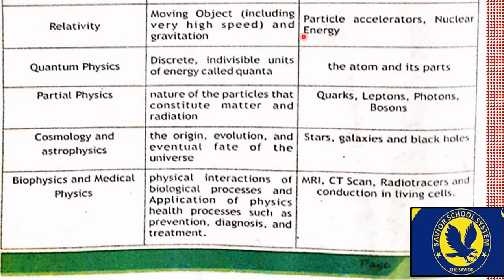اگلی branch ہے quantum physics — related to indivisible, discrete units جنہیں quanta کہتے ہیں — the atom and its parts۔ Quantum physics tries to understand whatever is happening in the universe at the smallest level۔ یعنی quantum physics اس بات پر focus کرتی ہے کہ چھوٹے سے چھوٹے particles میں جو کچھ ہو رہا ہے، وہ پوری universe کے ہونے کی وجہ ہے — basic، چھوٹے level سے universe کی explanation دیتی ہے۔